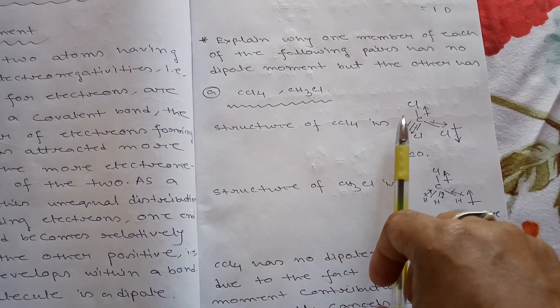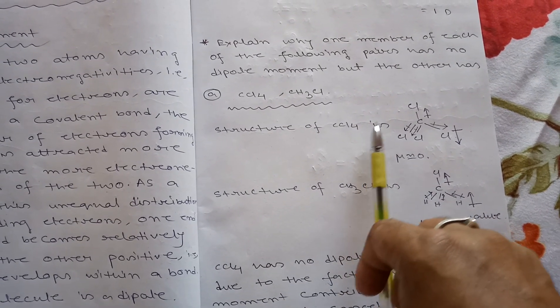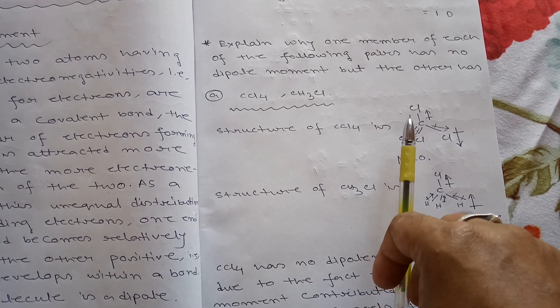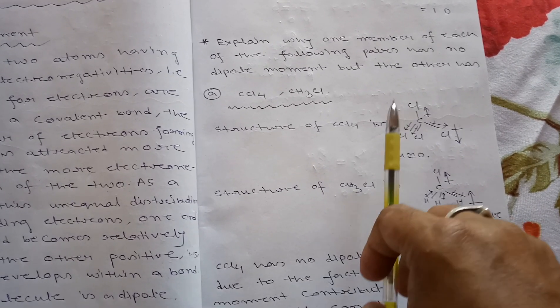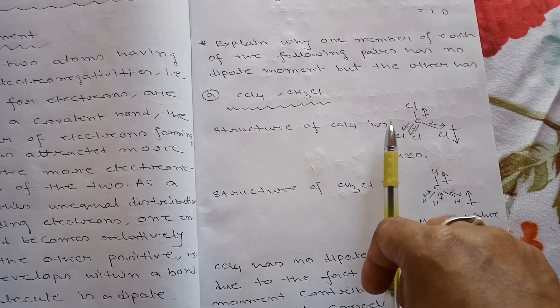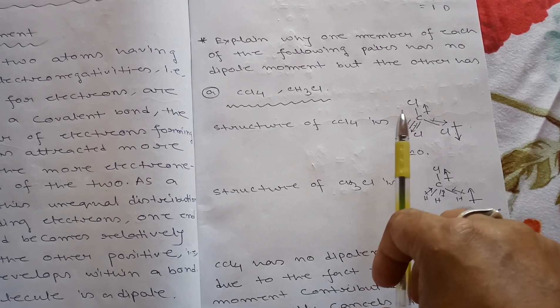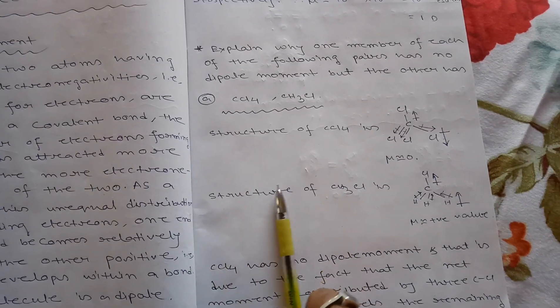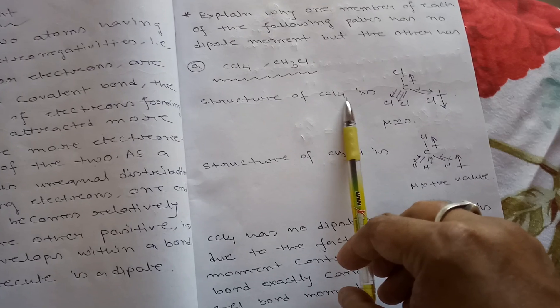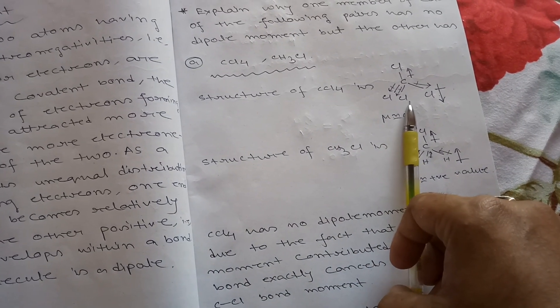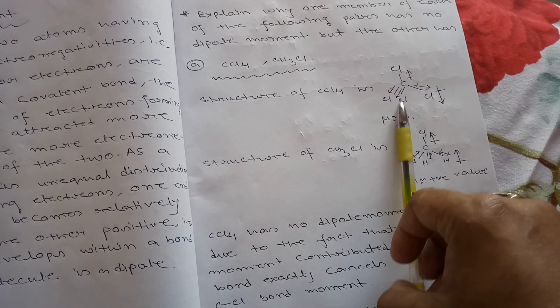If you don't know how to draw the organic structure or shape of the molecule, then please see our another video, that is hybridization and shape of the molecule. Now CCl4 has tetrahedral structure.